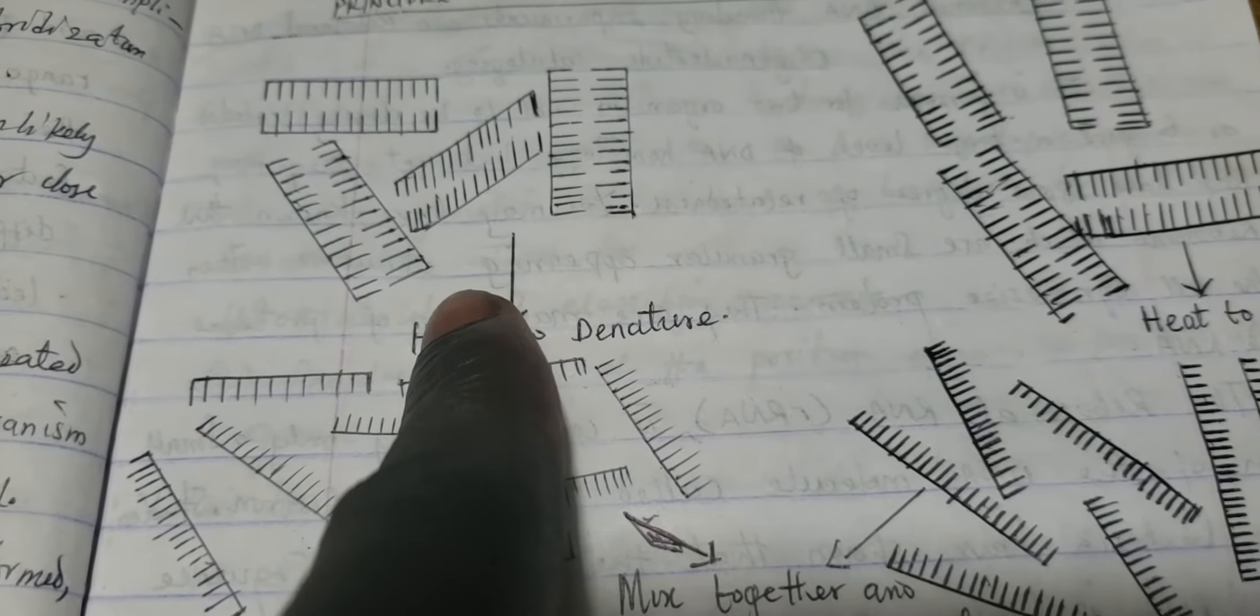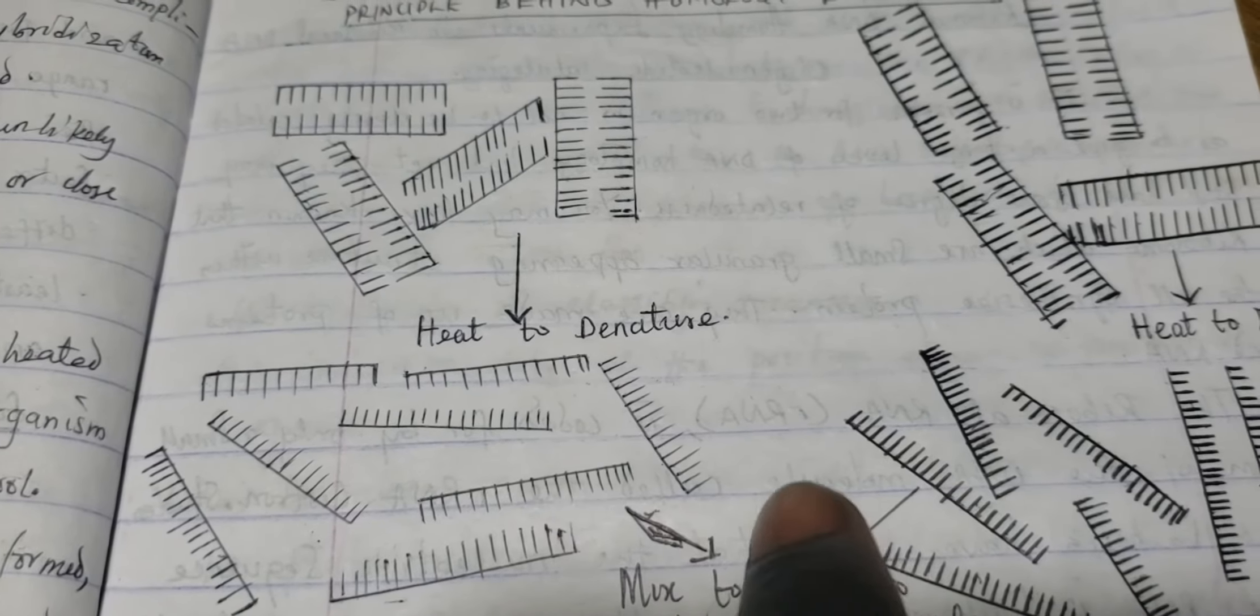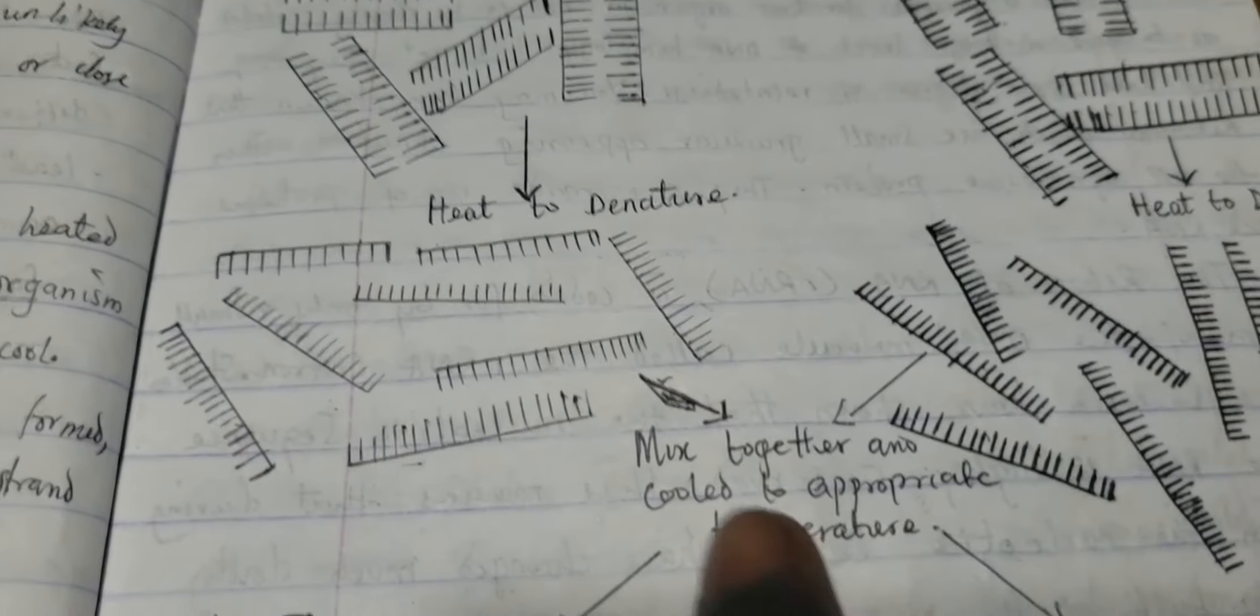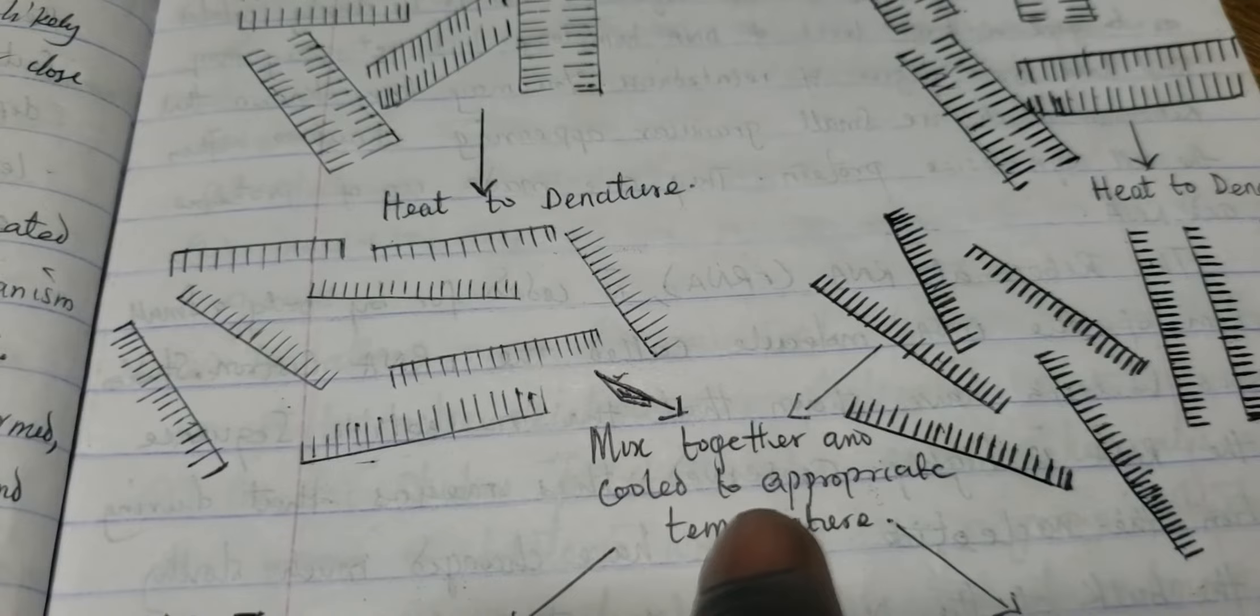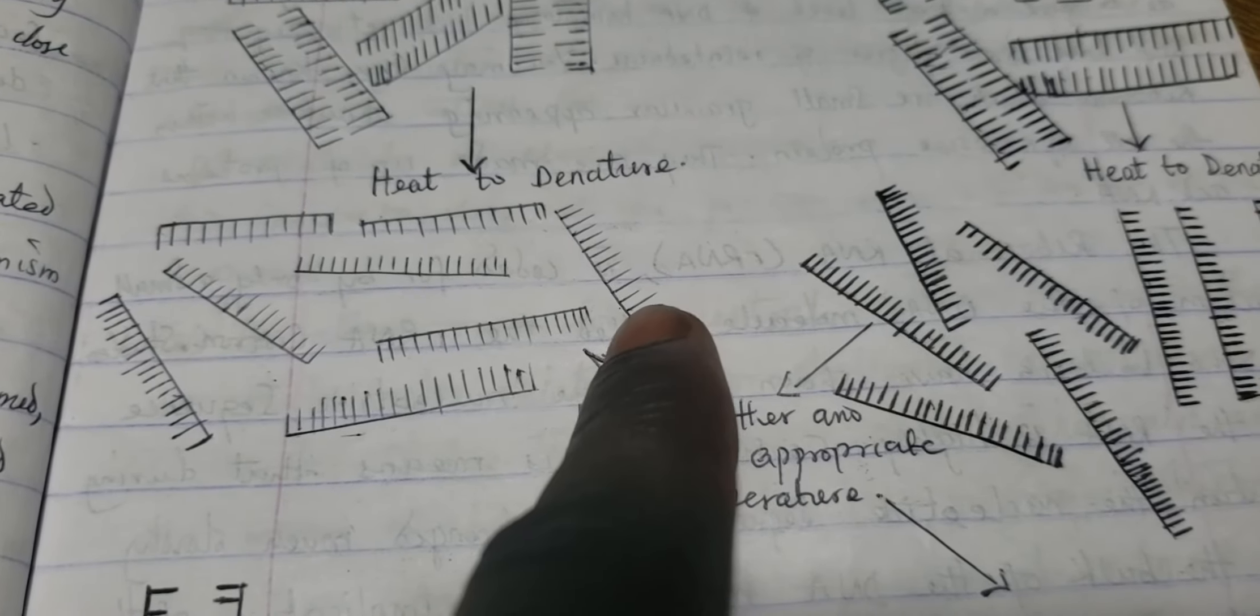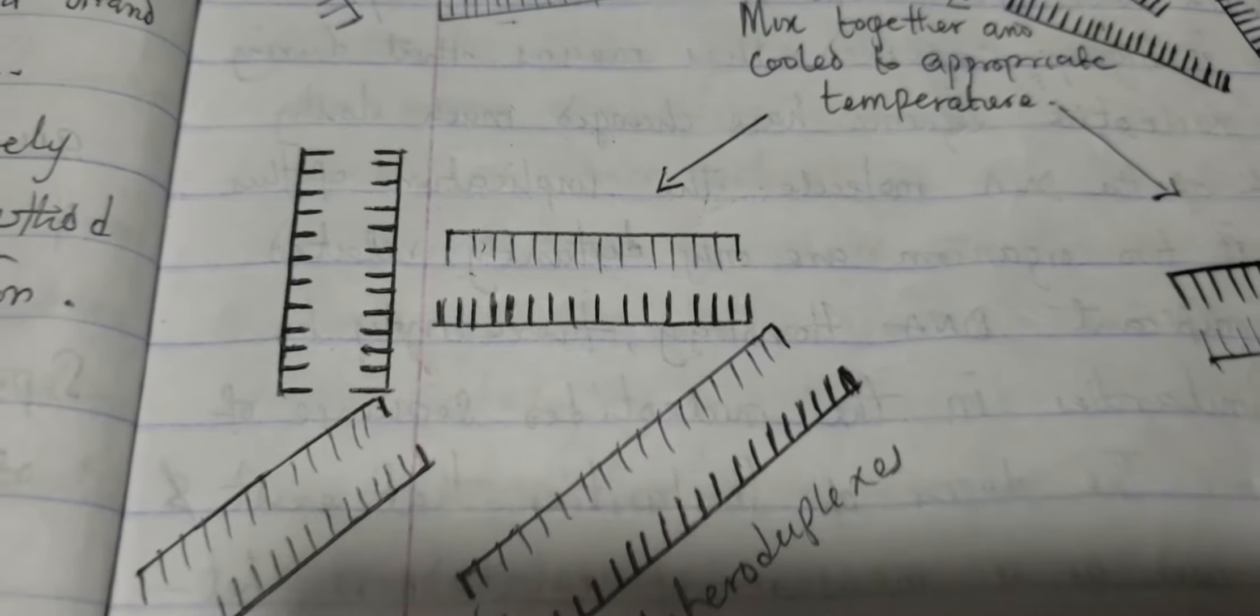When both of the broken-down DNAs are mixed together and left to cool down to an appropriate temperature, the strands can join together. When they join, they are said to be heteroduplex.